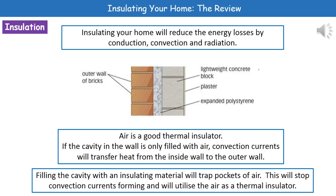If we consider what we can do to reduce these energy losses in our home, the key thing is insulating it. We can actually reduce the amount of energy we lose through conduction, convection, and radiation through installing different types of insulation within the home. The image in the middle there is of a cavity wall. What we've actually got in the majority of houses is a cavity wall construction — one wall on the outside, a gap, and then a wall on the inside.